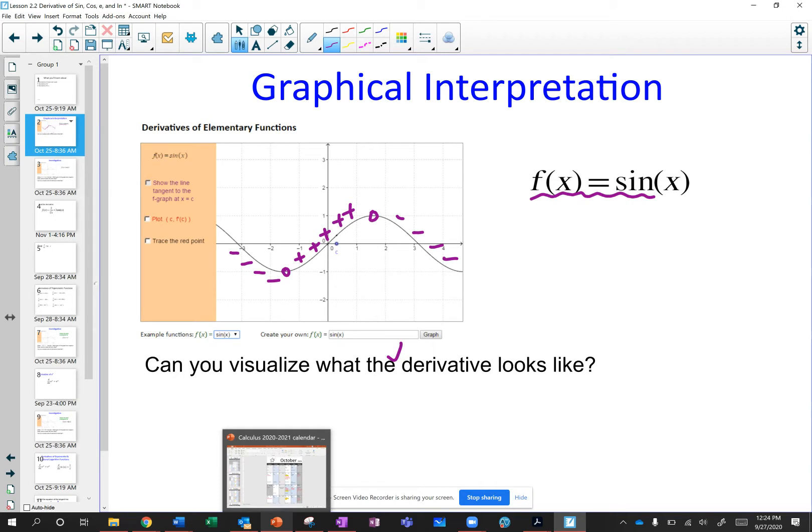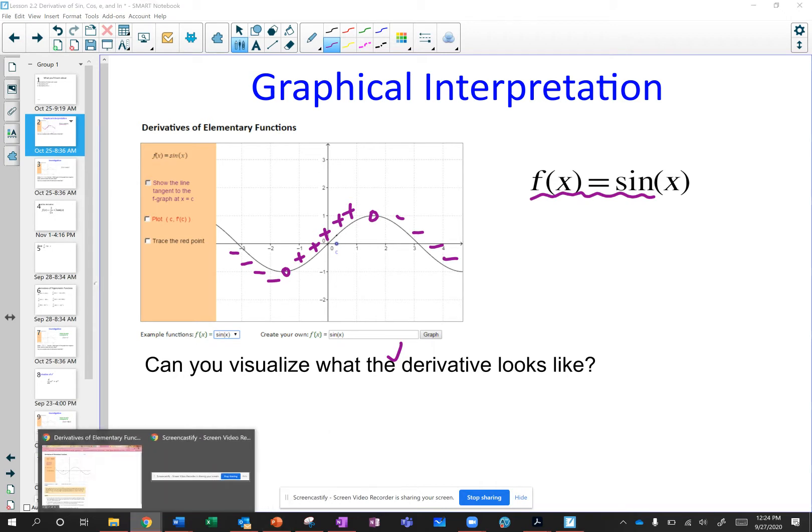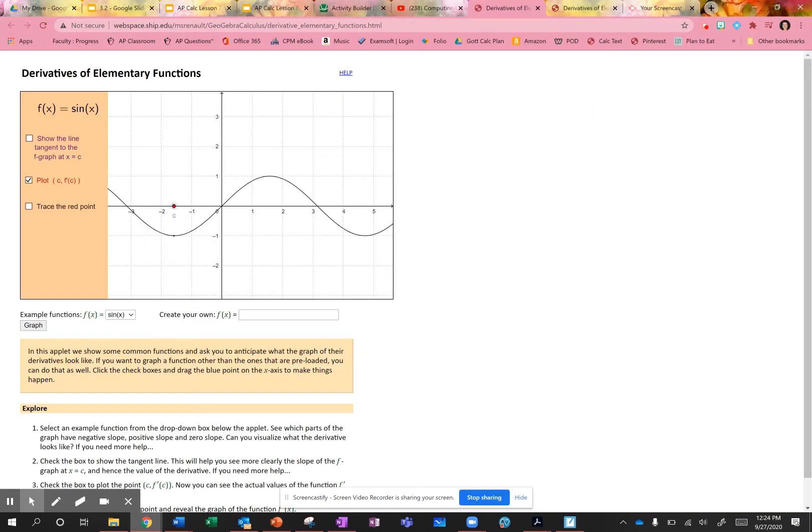Can you visualize what that is going to look like? Well, here we have a little app to try this. So what I'm going to do is this red dot value represents the slope. We can see that the slope is positive, positive, positive, positive, now 0. Now it's going to be negative because the function is decreasing, and then 0.